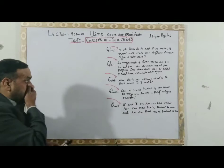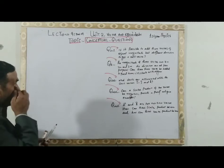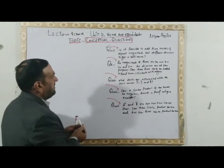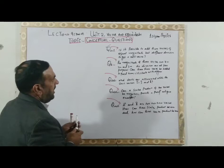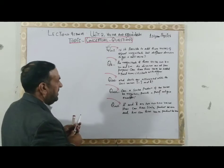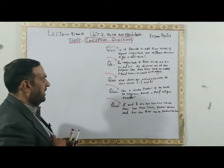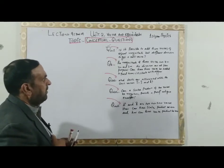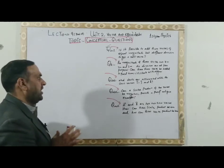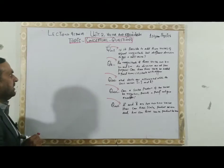This conceptual question is very important to understand. Question number 1: Is it possible to add 3 vectors of equal magnitude but different directions to get a null vector? The question is: if we have three vectors of equal magnitude but different directions, can we get a null vector?